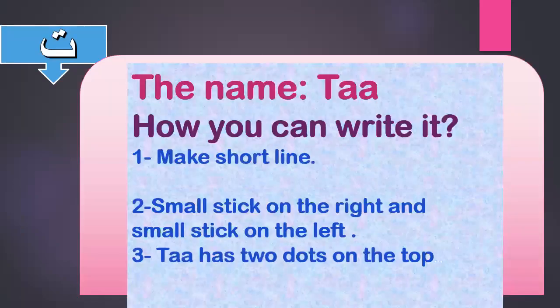Now we will study together letter Ta. Ba has two sisters: Ta and Sa. The name Ta — please read it after me: Ta. How do you write it? Make a short line, a small stick on the right and a small stick on the left.